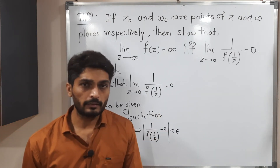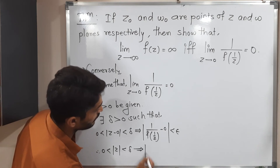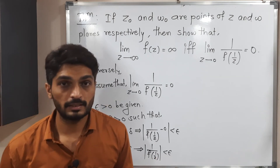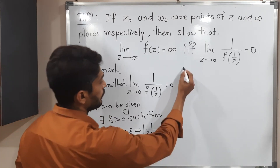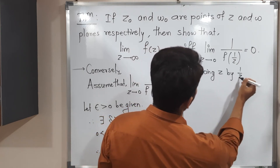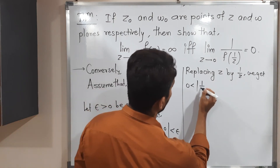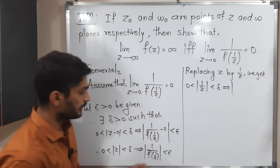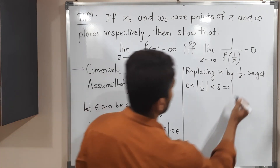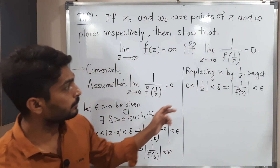Therefore 0 less than mod(z) less than delta, since subtracting 0 gives the same term. Now I am going to replace z by 1/z. After replacing z by 1/z, we get 0 less than mod(1/z) less than delta, which implies — replacing z by 1/z on the other side, where 1/(1/z) = z — so mod(1/f(z)) less than epsilon.